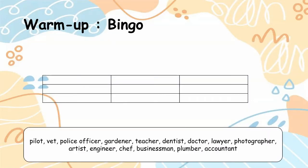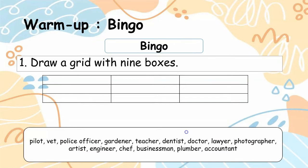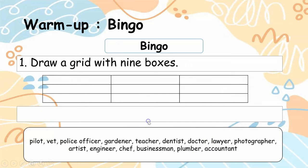Warm up: Bingo. Draw a grid with 9 boxes like this and then fill in the occupations accordingly. You can write anywhere — for example, pilot — you can write in the middle or anywhere. Just choose 9 occupations and fill up this bingo box.